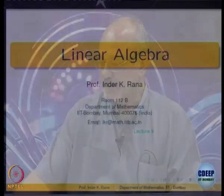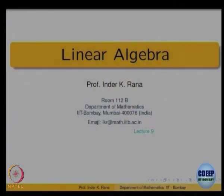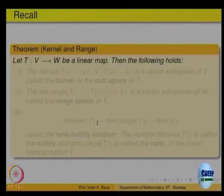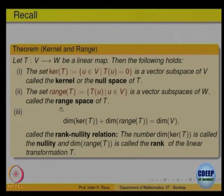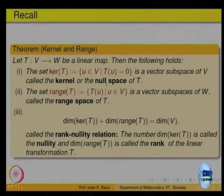Let us begin today's lecture by recalling what we have done last time. Given a linear transformation from a vector space V to W, we define what is called the kernel of that linear transformation — all vectors in the domain which go to the zero vector. That is called the kernel or the null space of the linear transformation.